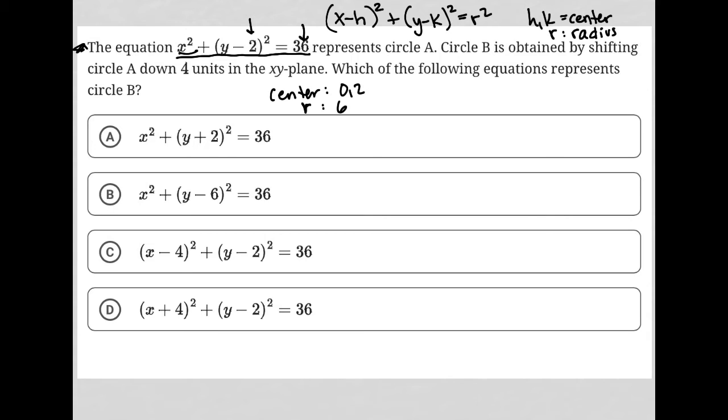The question goes on to say circle B is obtained by shifting circle A down 4 units. So that means this center will go from 0, 2 to 0, negative 2. If I were graphing this, 0, 2 would be here. I shouldn't put a sign there. This would just be 0, 2.